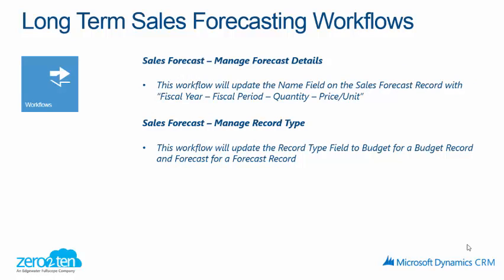The long-term sales forecasting also comes with a couple of workflows. The first workflow updates the name field on the sales forecast record with fiscal year, fiscal period, quantity, and price per unit. The second workflow updates the record type field to budget for a budget record and forecast for a forecast record, making it simpler to view and quickly identify what type of forecast record it is.